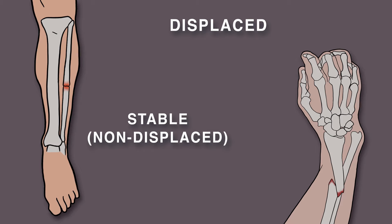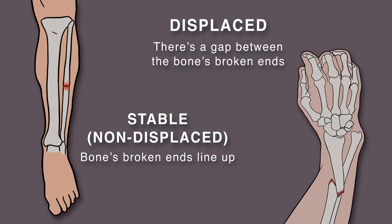Fractures can also be stable or displaced. With a stable fracture, also called a non-displaced fracture, the bone's broken ends line up and have not shifted out of place. However, with a displaced fracture, there is a gap between the bone's broken ends and repair may require surgery.